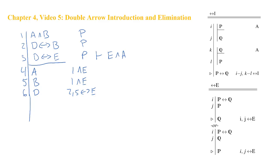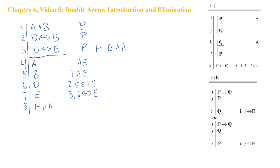Now we have the D in line six, so with line three we can get the E—three, six, double arrow elimination. So we just did two double arrow eliminations, one in each direction. Now to get the goal, we just have to make the conjunction of four and seven: E and A, four, seven, and introduction.